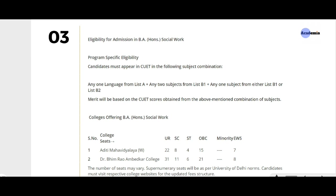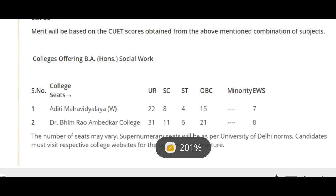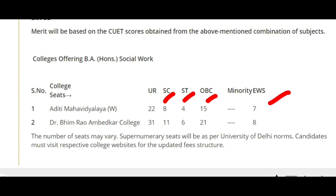Regarding seats at Aditi Mahavidyalaya: 22 seats are reserved for General category, 8 seats for SC, 4 for ST, 15 for OBC, and 7 seats for Minority. Note that Aditi Mahavidyalaya is a women's college — only girls study here, not boys. For Dr. Bhimrao Ambedkar College, which is co-ed: 31 seats in UR, 11 in SC, 6 in ST, 21 in OBC, and 8 in Minority.